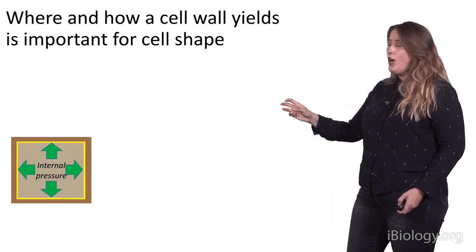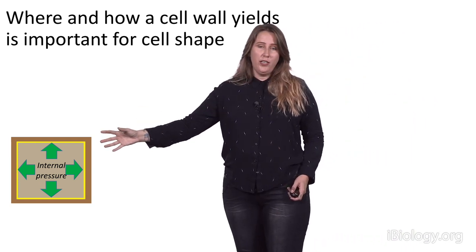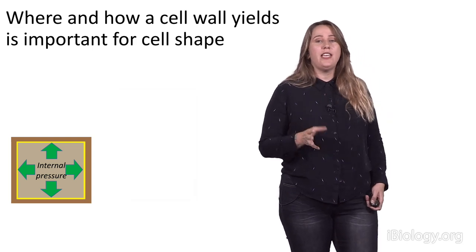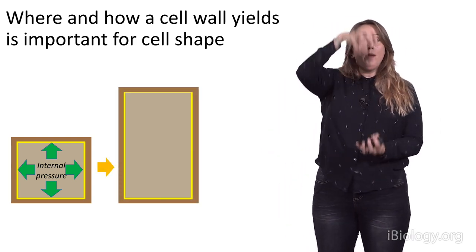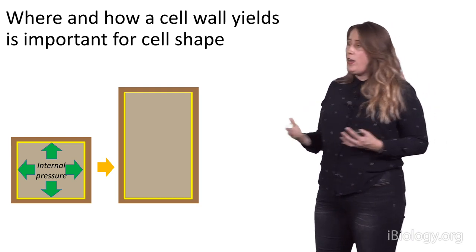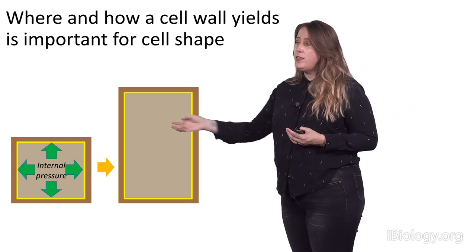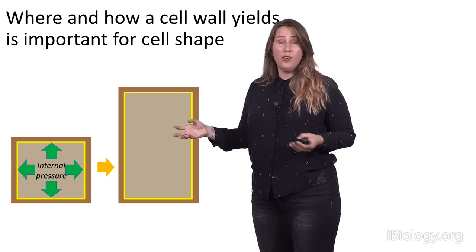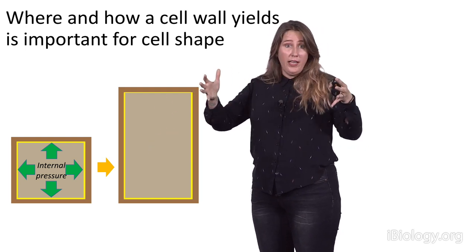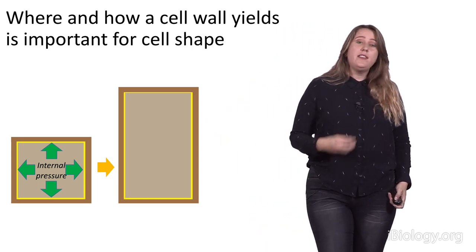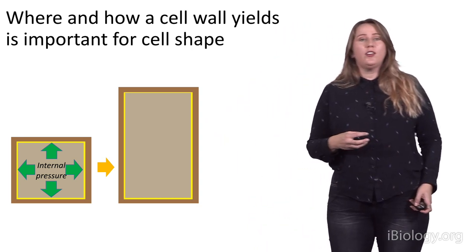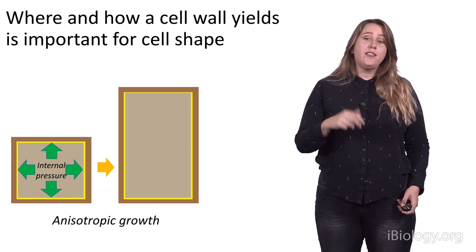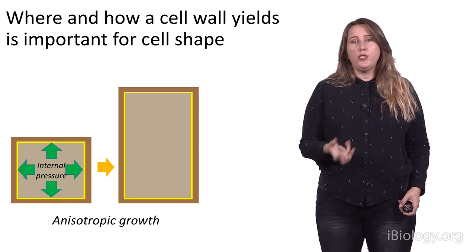So, here we have our square cell, high turgor pressure. And it's going to grow, but it's going to grow in a particular way. It's going to become more rectangular. So, it's going to grow more upwards than it does in width. And you could imagine that this could happen if the two side walls, sort of here in this axis, yielded easier to the turgor pressure than the two end walls, which might regulate the expansion in width. And this is a particular example that we tend to call anisotropic growth, where you have more growth in one direction than another, and this is the example that we're going to focus on in part two of the talk.